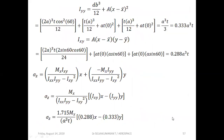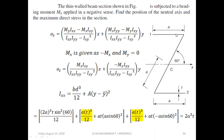Iyy equals db³/12 plus area times (x minus x-bar) squared. Using the same approach, for the inclined web the formula gives a³t·cos²β/12, with β equal to 60 degrees. For the flanges, add db³/12 plus area times the x-distance from the overall centroidal YY axis.